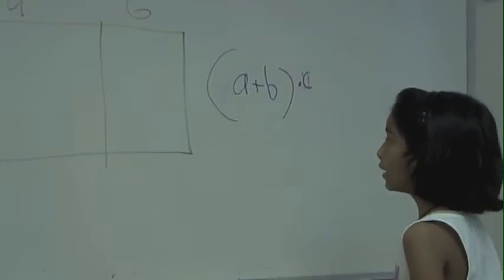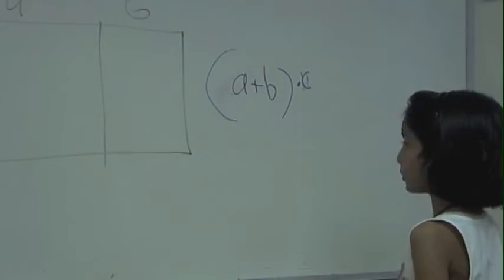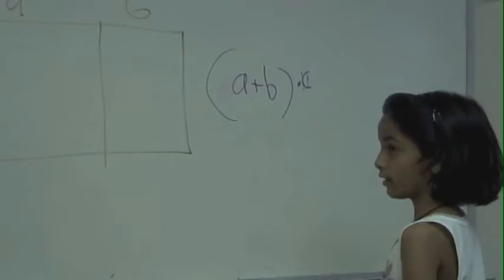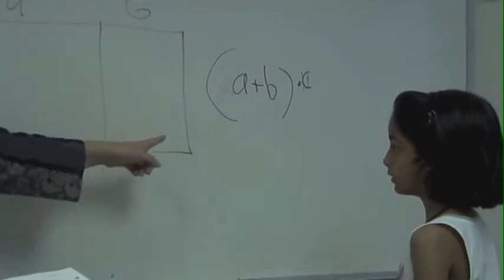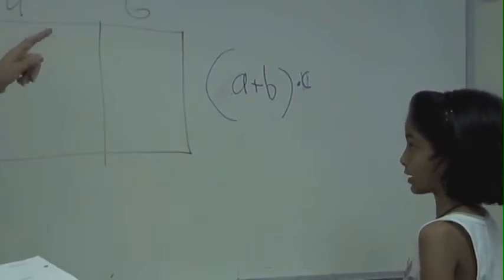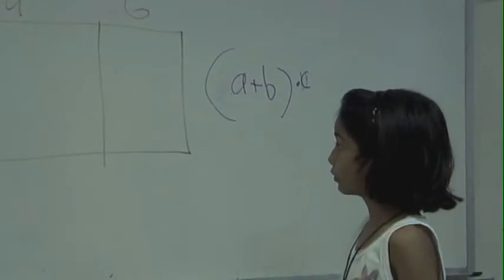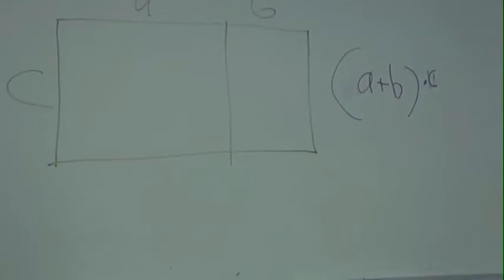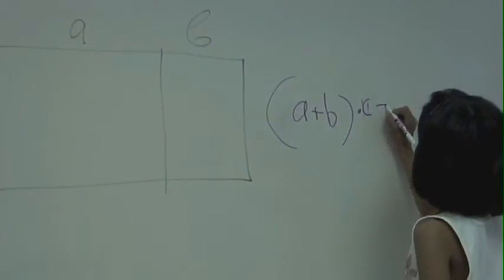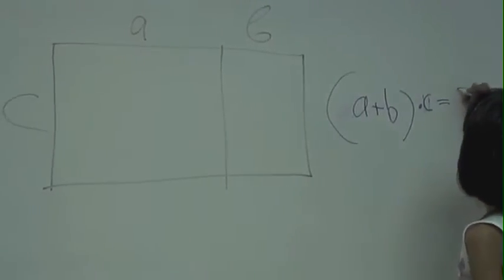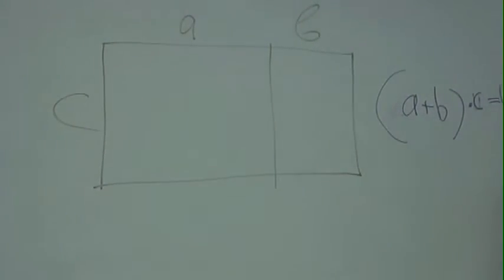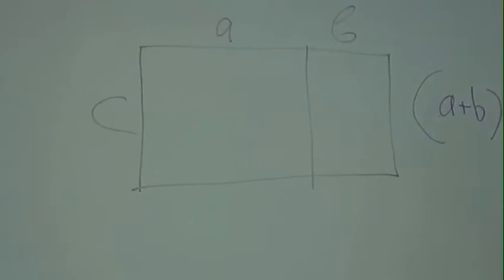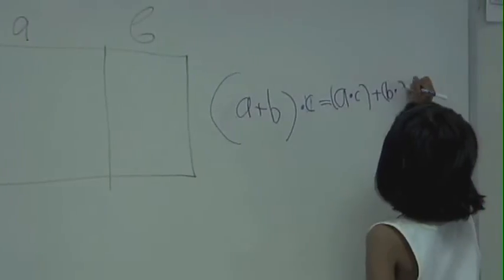What are you writing for me right now? It could be in parentheses multiplied by C. What is this? It's the area. Area of what? Of the rectangle — the big one. The bigger rectangle. How many rectangles do we have here? We have three rectangles. So, is there any other way to do the area of the big rectangle? You can do A multiplied by C plus B multiplied by C.